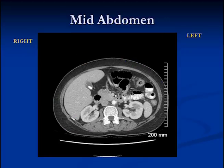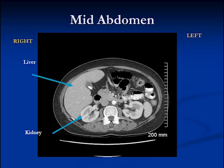Going down a little further in the abdomen, we get some other structures. We can see the liver again, and now we notice the kidneys because we're lower down. The kidneys are bilateral, and you can see the cortices and medulla are well defined when we give IV contrast. This is the spleen. We have the gallbladder here, and there are some calcifications within the gallbladder — these are actually stones.